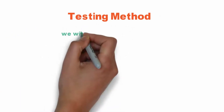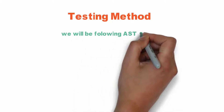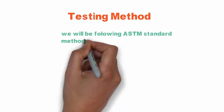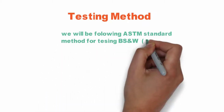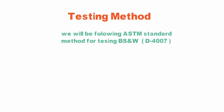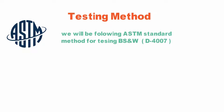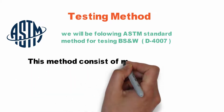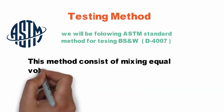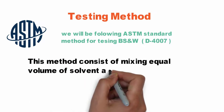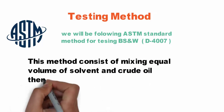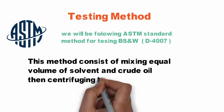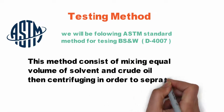For the testing method, we will be following the ASTM standard method for testing BSW, D4007. This method consists of mixing equal volumes of a solvent and crude oil, then centrifuging it in order to separate any solid, free water, or suspended particles.